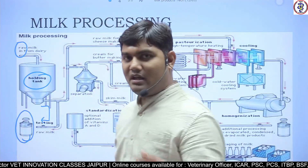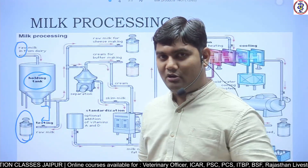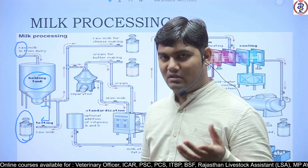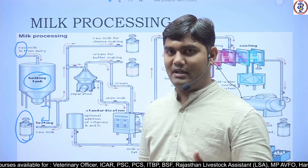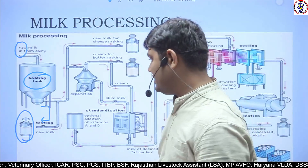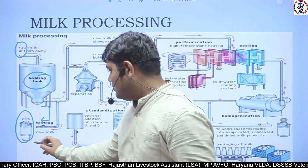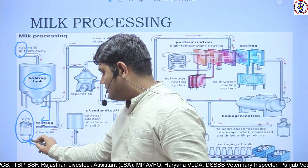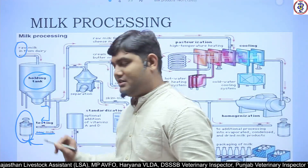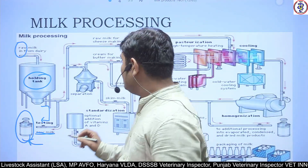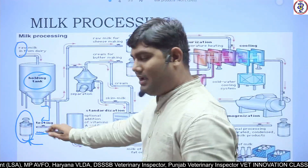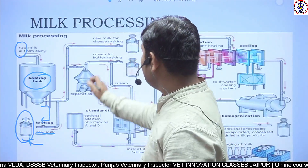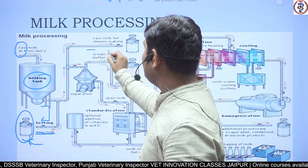From this tank, the milk is taken as a pool sample and tested for raw milk quality. Tests include microbial counts, adulterants, and chemical residues. When the raw milk meets the quality criteria, it is taken out for further processing, including cheese making.